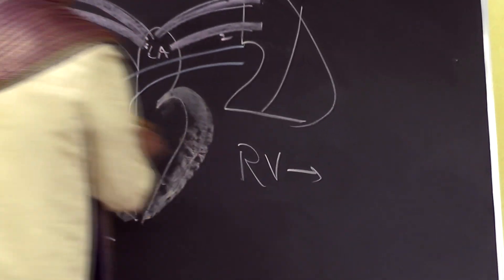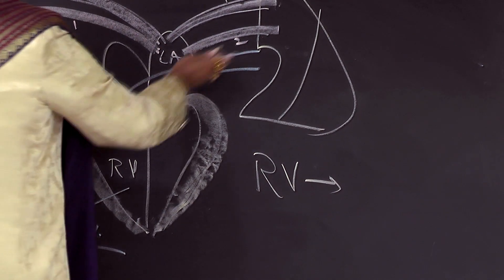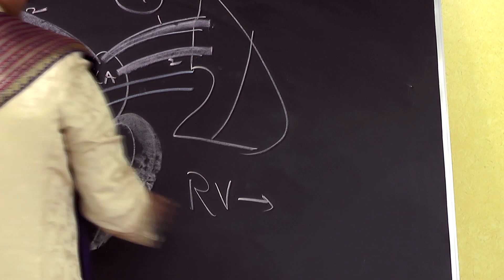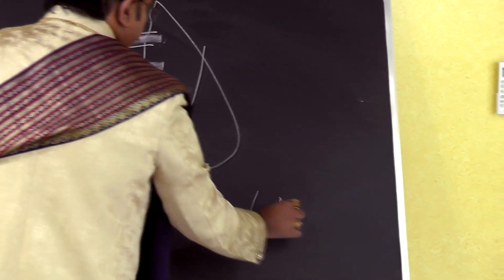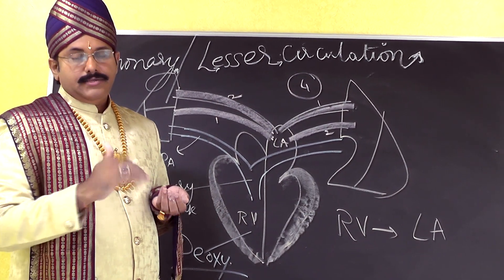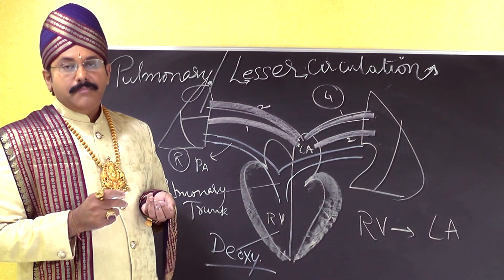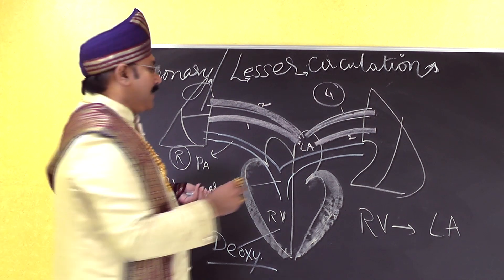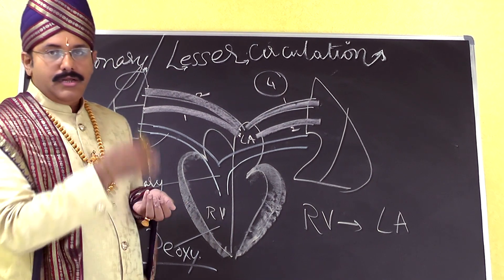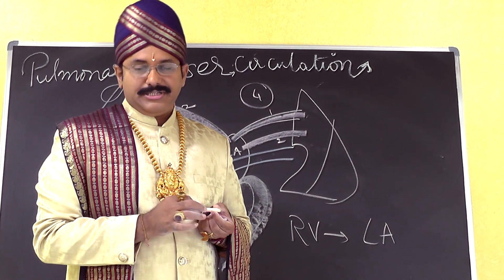To summarize the lesser circulation: it starts from the right ventricle, goes via the pulmonary trunk into the pulmonary arteries, and finally reaches the lungs where it gets oxygenated. This oxygenated blood is returned back to the left atrium via two pulmonary veins on each side — four pulmonary veins in total. The blood flowing from the right ventricle to the left atrium completes the lesser circulation.